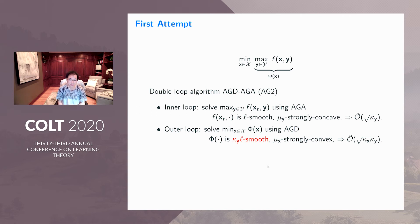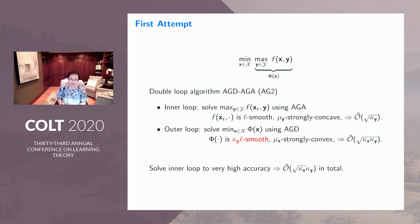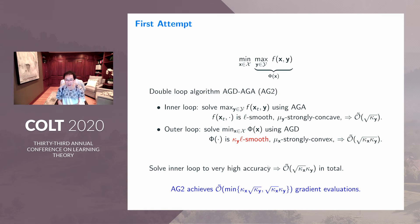The major problem is that when we perform the maximization, the function phi(x) becomes much worse in terms of smoothness. The smoothness parameter becomes kappa_y * L instead of just L, although the strongly convex parameter remains the same. So the new condition number of phi becomes kappa_x * kappa_y. That's why running accelerated gradient descent on the outer loop requires sqrt(kappa_x * kappa_y) iterations. The total gradient evaluations become sqrt(kappa_x) times kappa_y — with kappa_y outside the square root — which is suboptimal. By symmetry, we get the minimum of the two, matching the AG result.